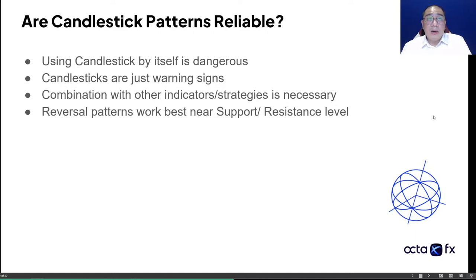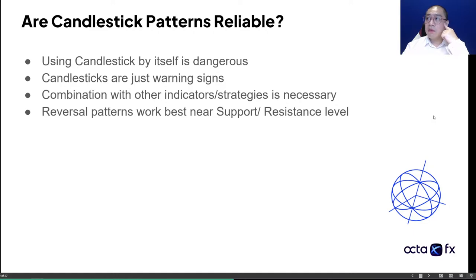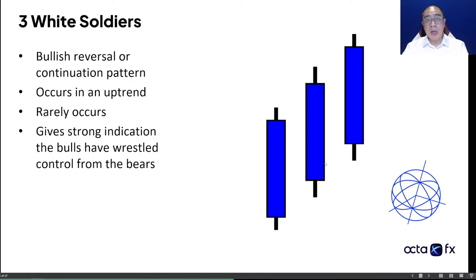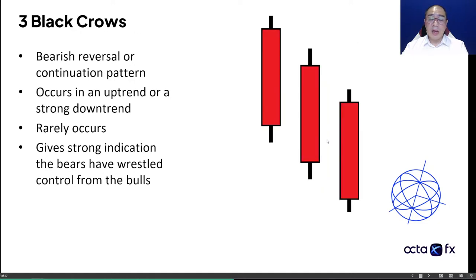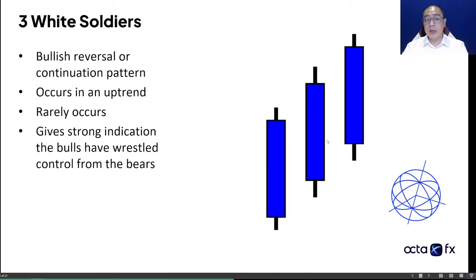The reversal patterns we talked about actually work best near support and resistance levels. Three black crows or white soldiers need to have a large significant body, and the wicks have to be not too long or at least equal on both sides. In real market conditions, when we look at three white soldiers or three black crows, there's a lot of variation. This is a guideline — the market doesn't have to look exactly like this, because in the futures market, the market has to actually gap down as well.